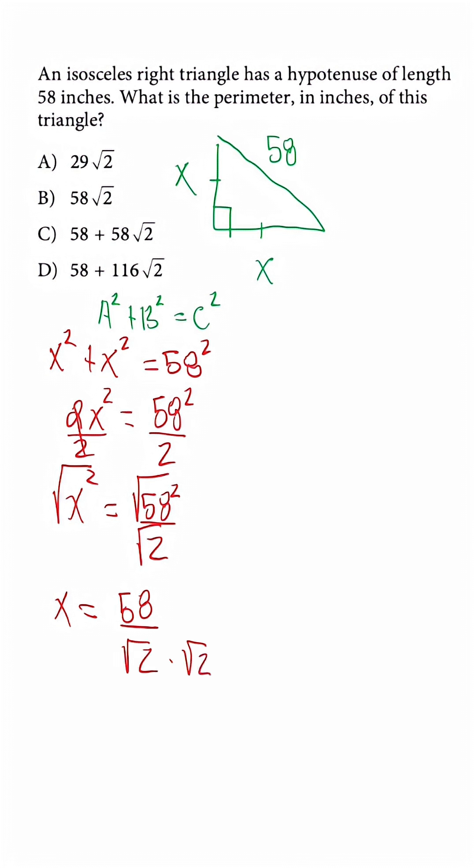Let's rationalize, and then once we bring this to the top we're going to have x is equal to 58 radical 2 all over 2. Then when we simplify this is going to turn into 29 radical 2.